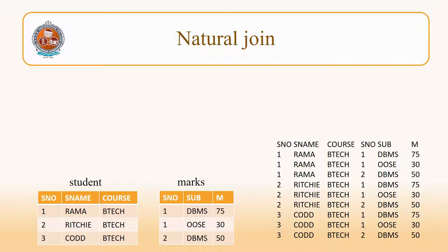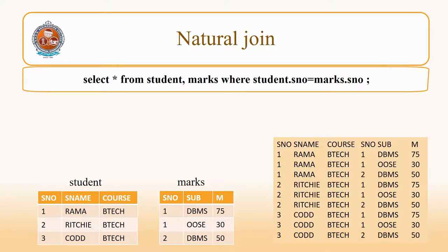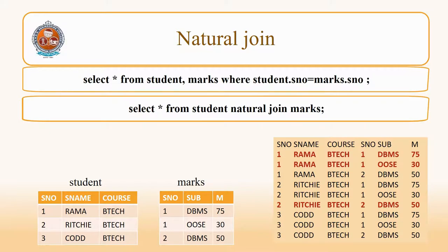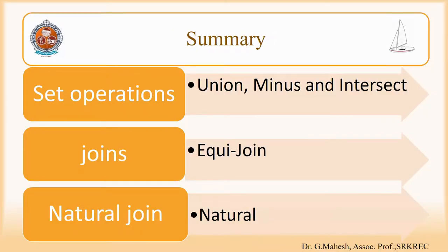Now let us see natural join. Natural join is the same as equi join, with the only difference being that you don't have to give the condition — it automatically uses the common field names as the condition. Instead of giving the condition, you directly use the NATURAL JOIN keyword. The common fields that have the same name in both tables are joined automatically. Another difference between equi join and natural join is that the common field does not appear twice in the result. In this slideshow, we have discussed set operations, joins, and finally natural join.